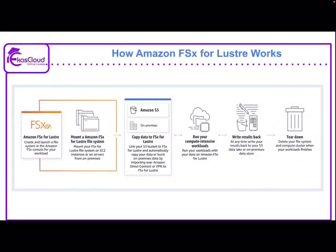Now we'll see how Amazon FSx for Lustre works. First, we have to create and launch a file system in the Amazon FSx console for your workload. For that, we should mount the Lustre file system to an EC2 instance, or from on-premises. In AWS, we copy the data in S3 — that is, we link the data from an S3 bucket to FSx for Lustre — or burst on-premises data by importing over Amazon Direct Connect or VPN to FSx for Lustre.